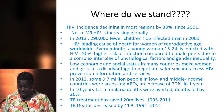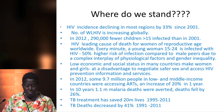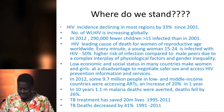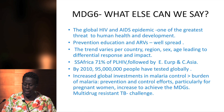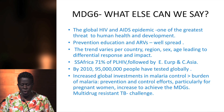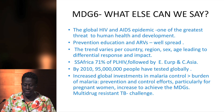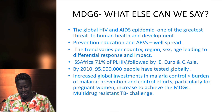Malaria deaths fell by 26%. TB treatment has saved 20 million lives from 1995 to 2011, and TB deaths have also decreased by 41%. The global HIV and AIDS epidemic is one of the greatest threats to human existence and development. Prevention, education, and antiretrovirals are increasingly available worldwide, though the trend varies per country — some are much further ahead while others are still struggling.